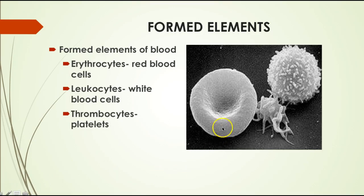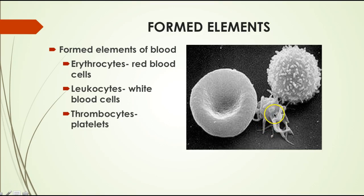The formed elements of the blood are the red blood cell, white blood cell, and platelet. They're called formed elements because two of them are not considered true cells. Erythrocytes — red blood cells — lack a nucleus and many organelles, so they're not true cells. Leukocytes, or white blood cells, are the only ones considered true cells with organelles and a nucleus. Thrombocytes, or platelets, are not cells; they're fragments of a cell.